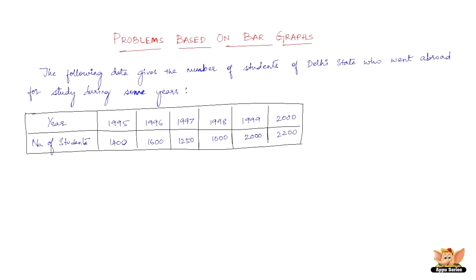In this video let us solve some problems based on bar graphs. The question reads like this: the following data gives the number of students of Delhi state who went abroad for study during some years.